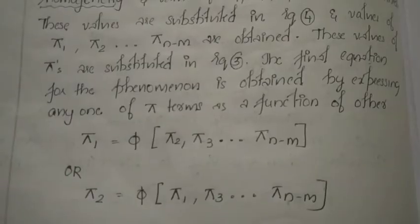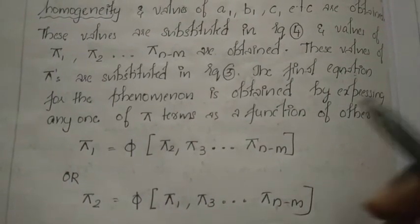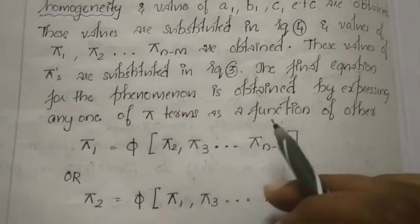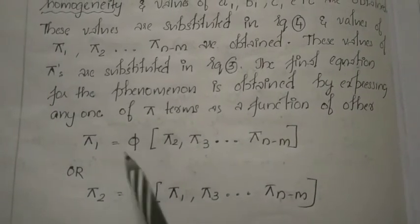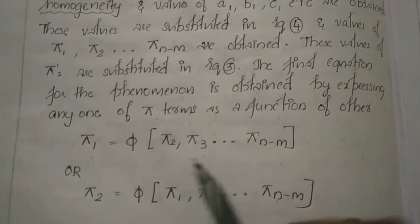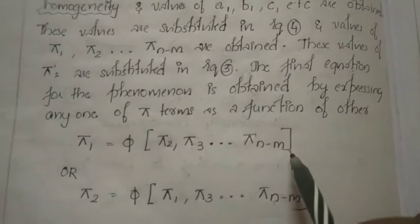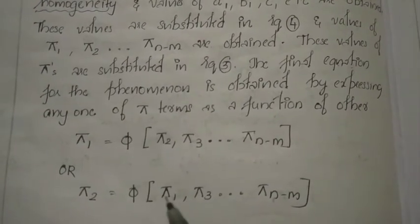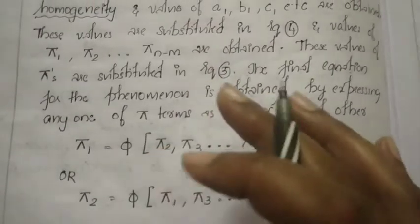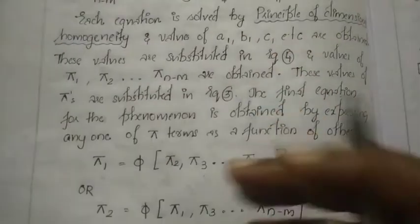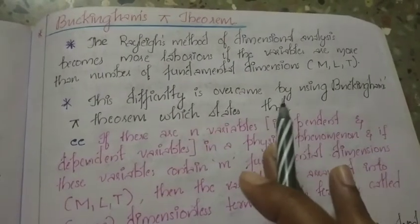The final equation of the physical problem is obtained by expressing one of the Pi terms as a function of the other Pi terms. For example: π1 = φ(π2, π3, ... πn-1), or alternatively π2 = φ(π1, π3, ... πn-1).